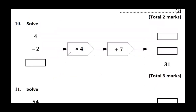Question number 10: Here we have a function machine which multiplies by 4 and then adds 7. So if the input is 4, 4 times 4 is 16. 16 add 7 gives 23. If the input is minus 2, minus 2 times 4 gives minus 8. And minus 8 plus 7 gives minus 1.